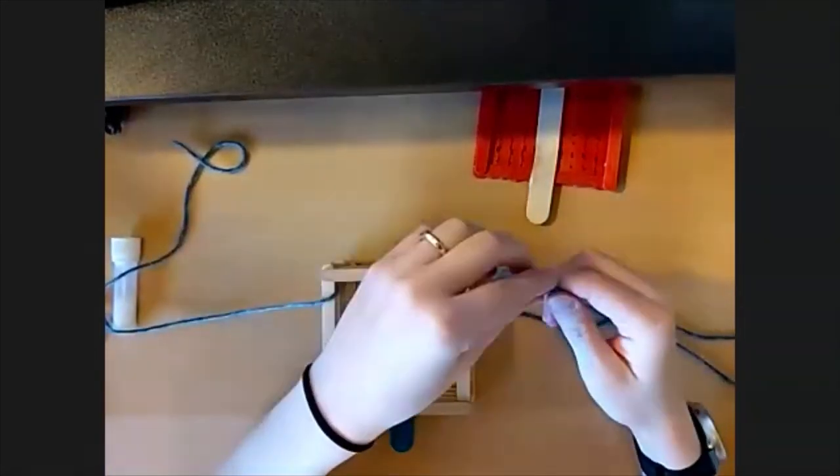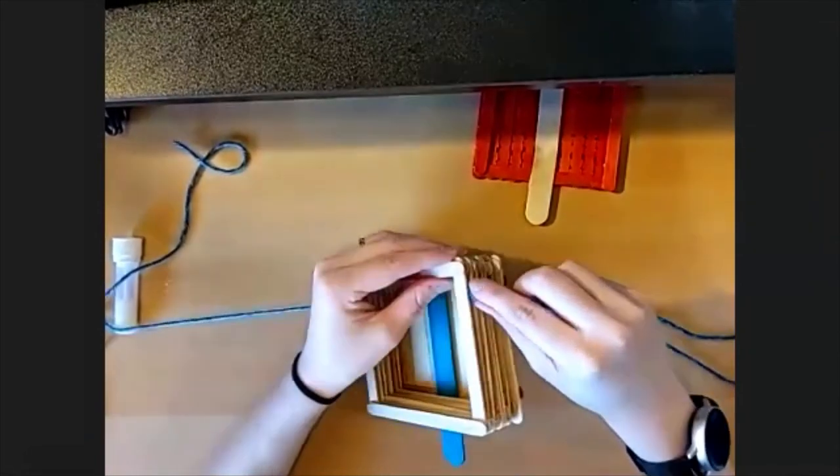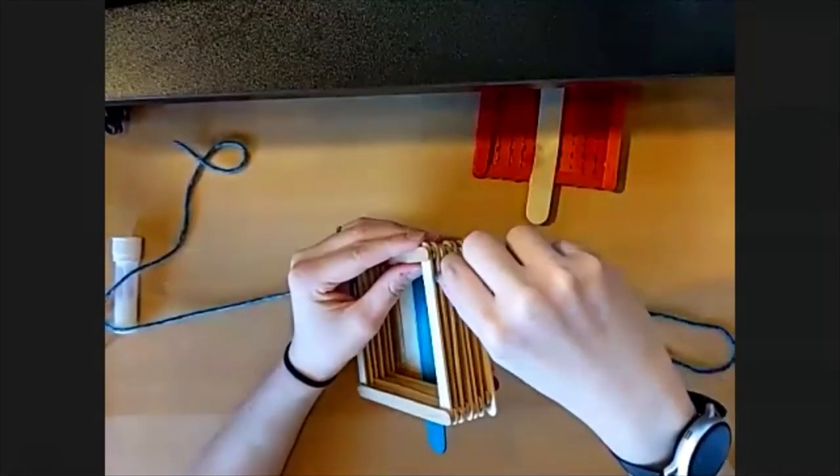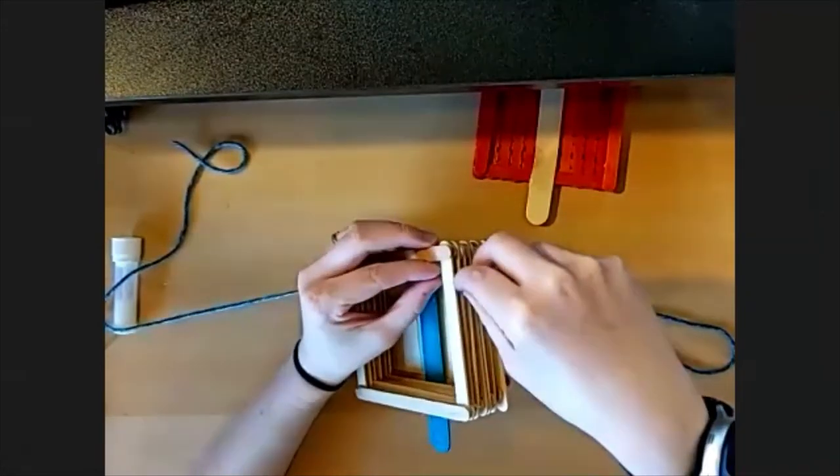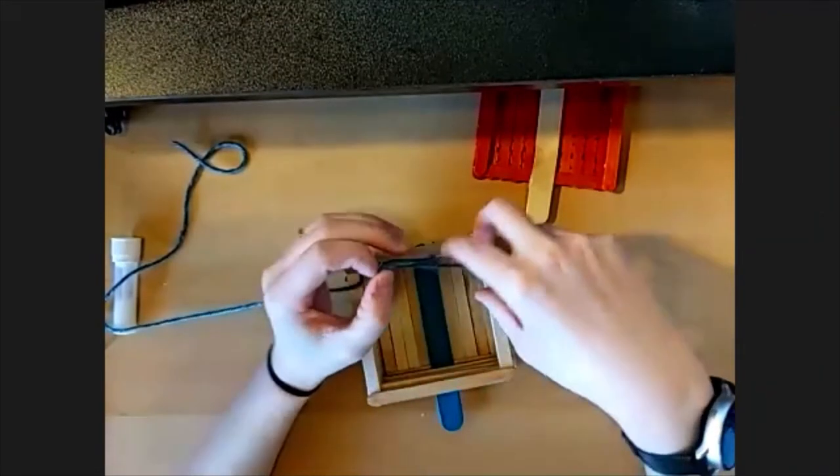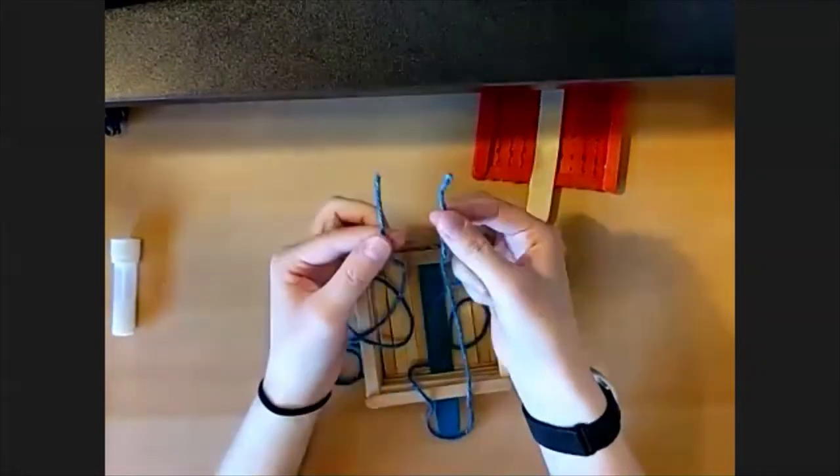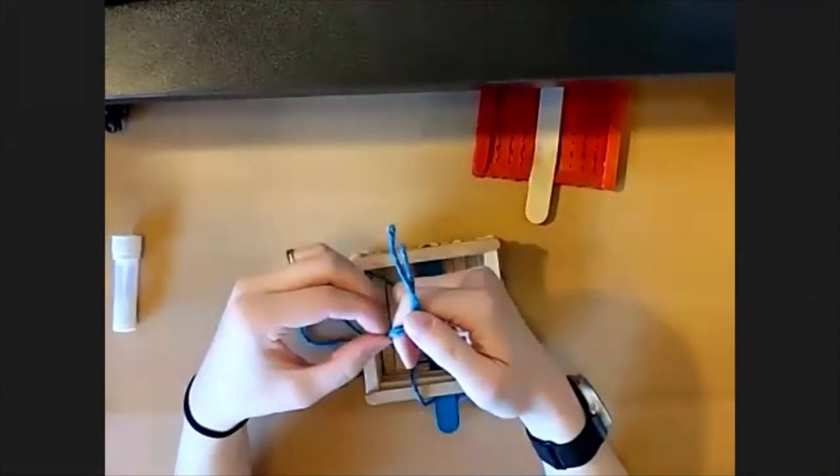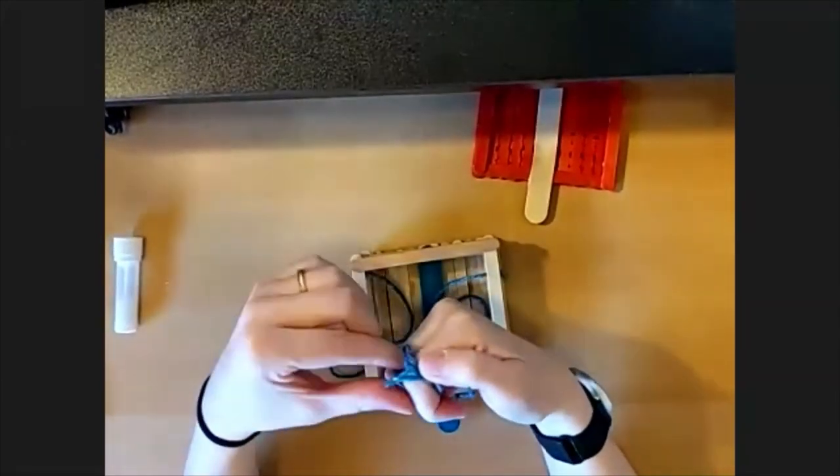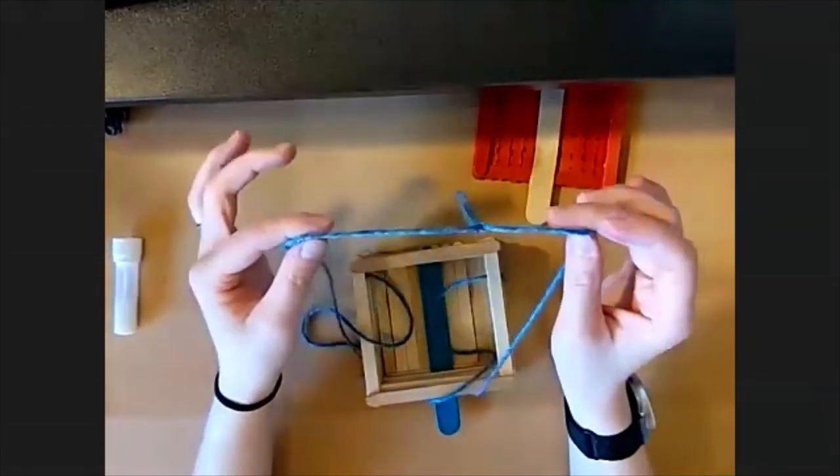And I'm going to poke it through the top two layers on this side, like that. I'm going to pull them until I've got the two ends kind of even, and then tie a knot at the end so that you can hang it on a tree branch.